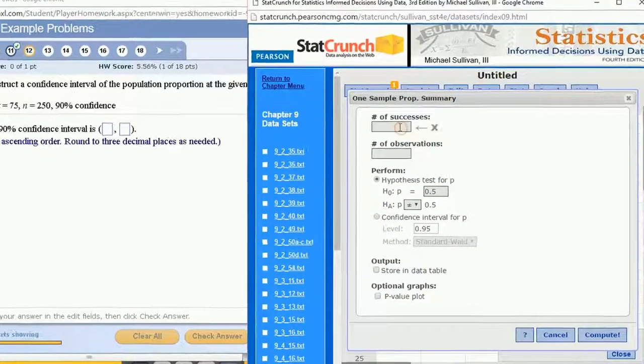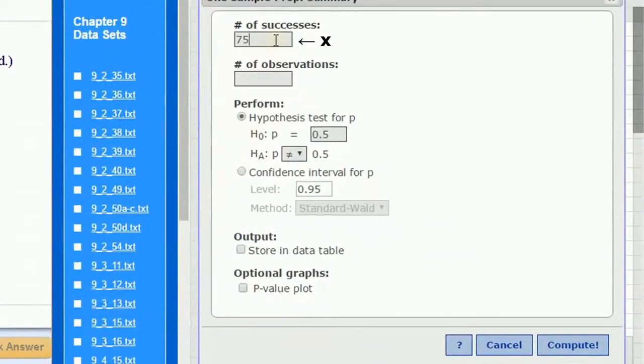We want to create a 90% confidence interval, so we put in 75 for the number of successes, 250 for the number of observations. We want to select confidence interval for p and set the confidence level to 90 percent. Keep the method at Standard Wald, no need to change that.